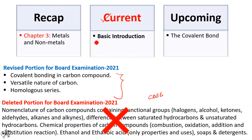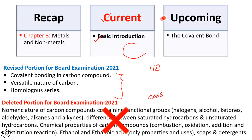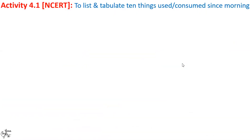No assessment can be made from these deleted topics. Today in this video, I will give you a basic introduction of the chapter which will focus on what makes carbon so special that an entire chapter has been dedicated to this single element out of 118 well-known elements. In my next class, I will take up a very important topic, the Covalent Bond. To realize how important carbon is, let us undertake a simple activity.